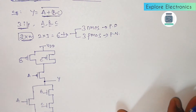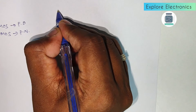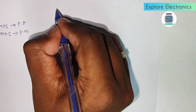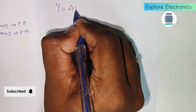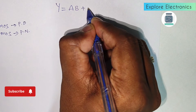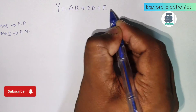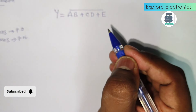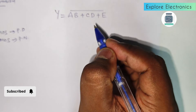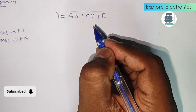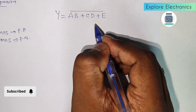Now let me take a more complex expression: y = (a·b + c·d + e)̄. Here we have five inputs, so we require a total of ten transistors. Let me write the pull-down network first.